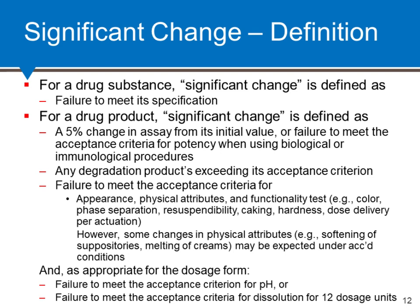For drug product significant change, assay using biological or immunological procedures means failure to meet acceptance criteria. Many other attributes — chemical as well as physical — are simply failure to meet acceptance criteria. Noting, however, that for an original registration, the applicant is proposing to set not only shelf life but specification. So you have two variables that depend on each other, yet both are subject to review and approval. Other attributes include degradation products, appearance, physical attributes, functionality tests, pH, and dissolution — and when judging significant change for dissolution, 12 units are required.